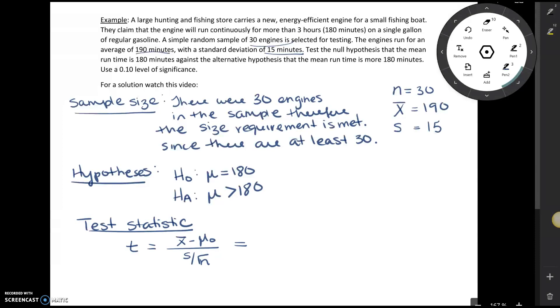So our x bar we already identified as 190. The value in the hypotheses is 180. S is 15, and there were 30 engines in our sample. So 190 minus 180 is 10. And then you'll want to take your calculator and type in 15 divided by the square root of 30. You'll want to take this out to four decimal places. So now we've got 10 divided by 2.7386.